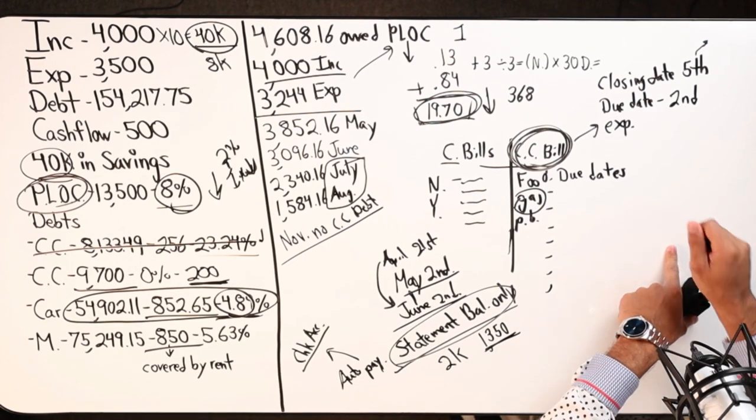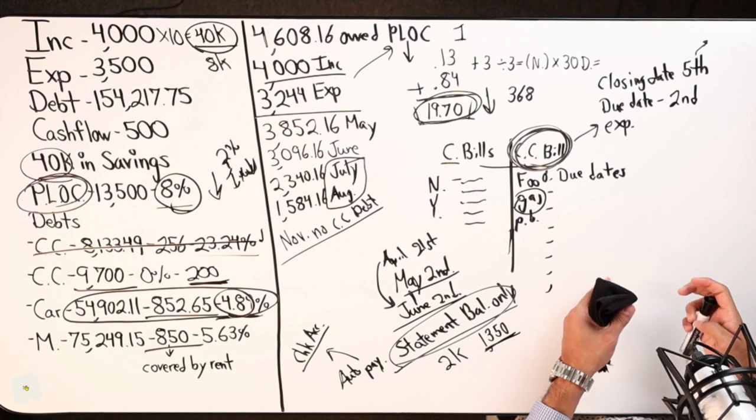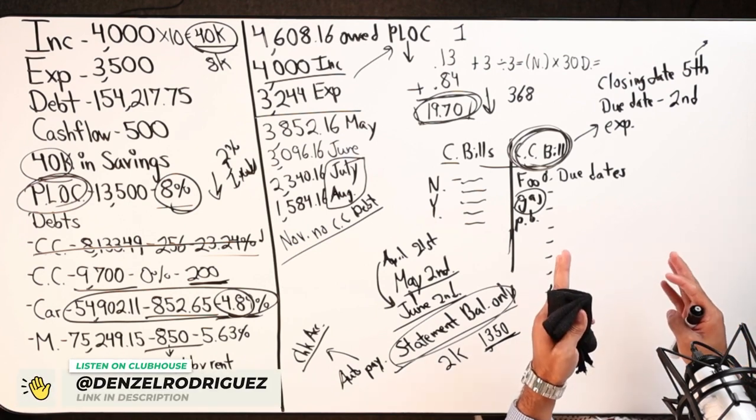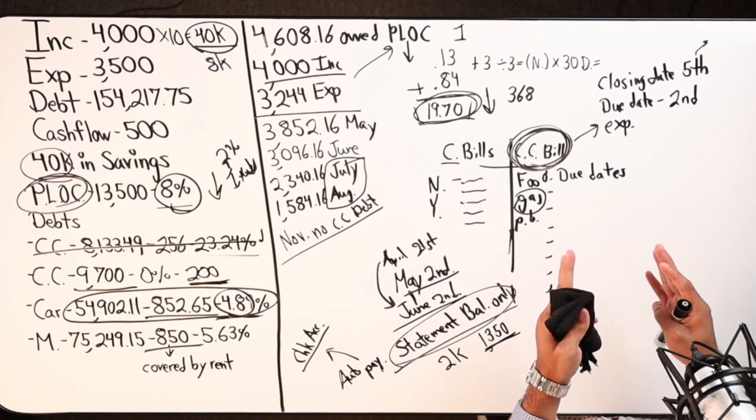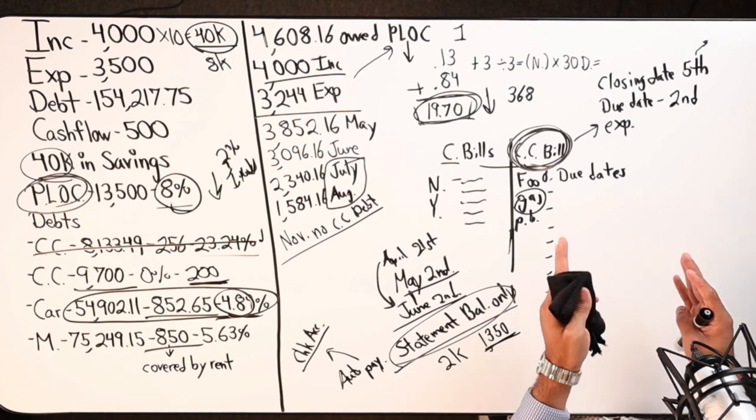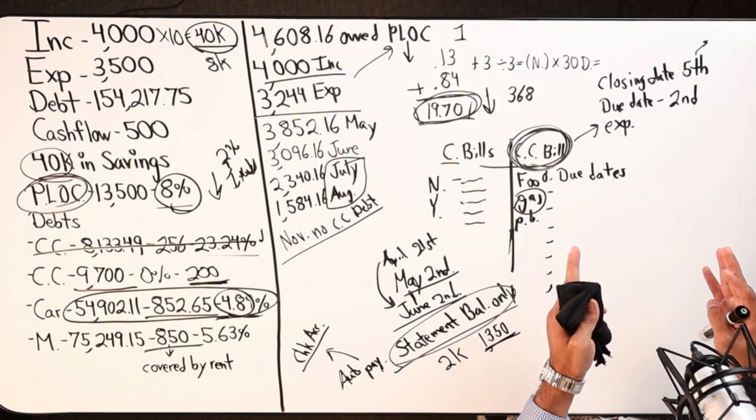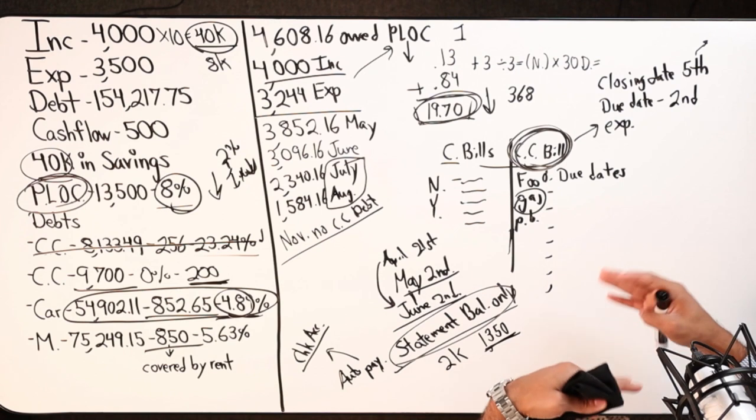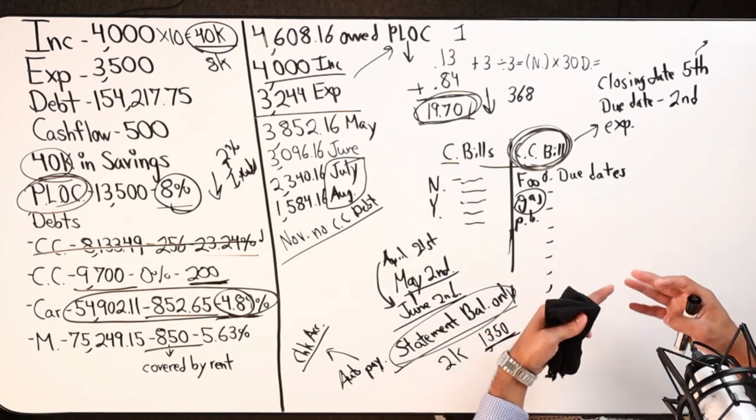Yeah, so all the bills, as long as you set it up after the fifth. Meaning you never really swipe the card between the second of the month and the fifth. Literally, you're setting up all your bills between the sixth of the month all the way to right before the due date, the first.